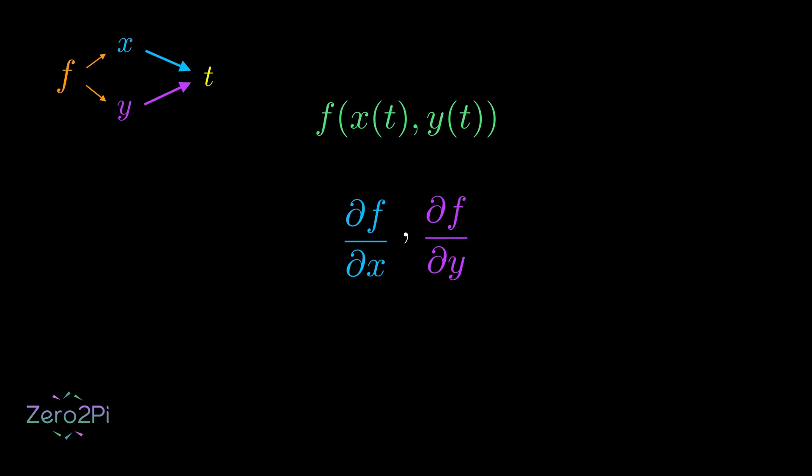That is why we also need to calculate the change in x with respect to t, meaning dx/dt. Similarly, dy/dt. Since x and y both depend only on t, that is why we can write d instead of the partial derivative's curly d. Adding both terms will give us the total derivative of f with respect to t. This is the chain rule for multivariable functions.